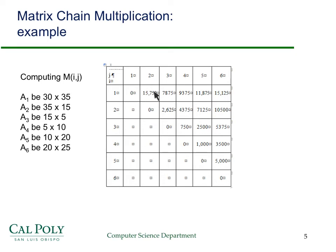Then this entry — what does this represent? The minimum number of multiplications required to multiply matrix 1 times matrix 2. There's no real minimum to take care of; it's going to be what it is. So for A1, it's 30 by 35, and A2 is 35 by 15. So 15,750 is the product of 30 times 35 times 15. Let's take an easier one: 3 to 4 is going to be 15 times 5 times 10 — 15 times 5 is 75, times 10 is 750.